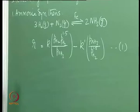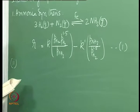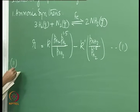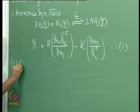This is one term, minus k₁-dashed times partial pressure of NH₃ to the power of 1.2. This is equation 1. Next is the oxidation of sulfur dioxide.